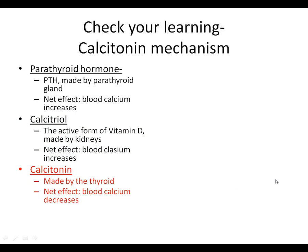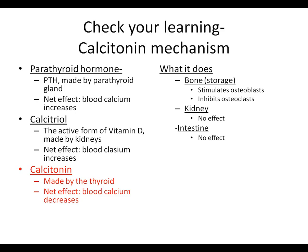Finally, calcitonin. Calcitonin has its main effect on the bone, and it has the reversed effect of parathyroid hormone: it stimulates the osteoblasts and inhibits the osteoclasts. Remember, osteoblasts take calcium out of the blood, and since calcitonin is the only hormone that responds to high blood calcium levels, these are the bone cells that store that excess calcium.